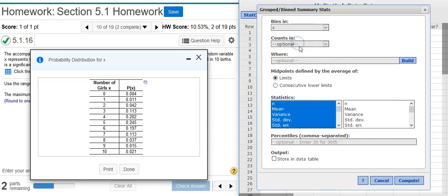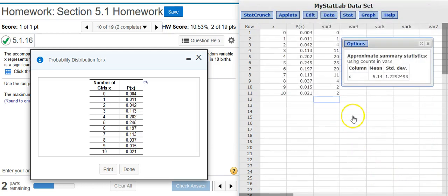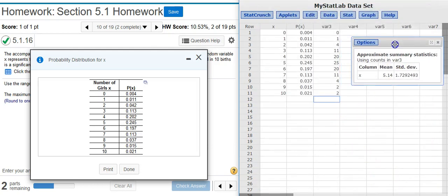The bins are going to be your x values, that's your random variable. The counts are going to be what we just calculated in the new column there. And I want the mean and the standard deviation. There's my mean and standard deviation.